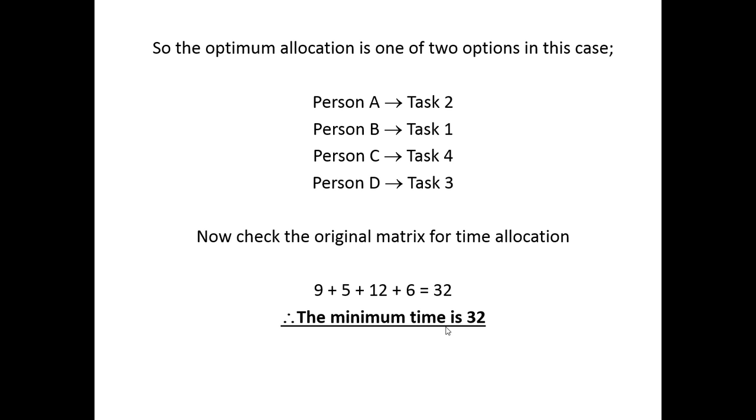I hope this has helped with the allocation problem. Recapping: we've completed a row reduction and attempted an allocation, then completed a column reduction and attempted another allocation. Both allocations were unsuccessful, so we proceeded to the Hungarian algorithm. At the end of the Hungarian algorithm we performed an optimal allocation. We've then gone to our bipartite graph and allocated each person a single job, and from that we've calculated the minimum time for all people to complete their tasks.